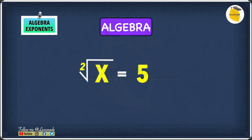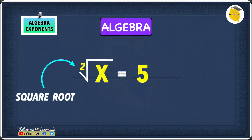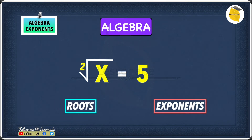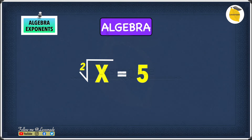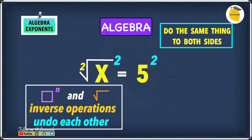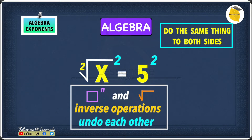We have the square root of x equals 5. As you can see, we have a square root, and to undo a root we have to use an exponent because they cancel each other out — they're inverse operations. Because we are square rooting x, to undo the square root we have to square it, because the square root of x squared will cancel each other out. Remember, we need to do the same thing to both sides, so we square the other side as well — square the five.